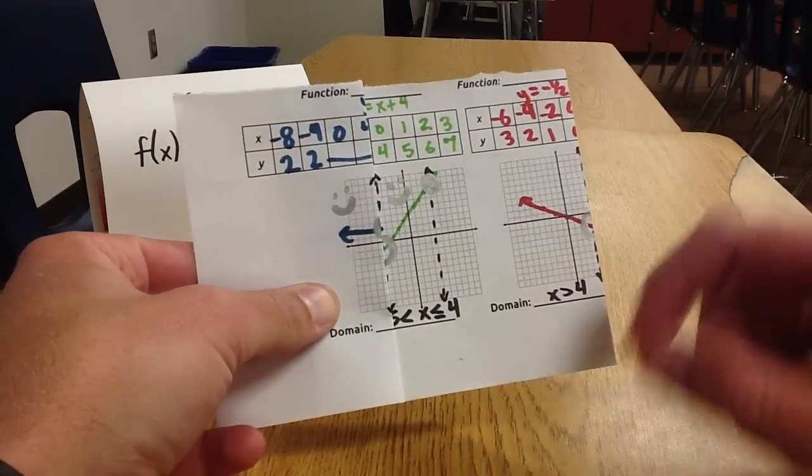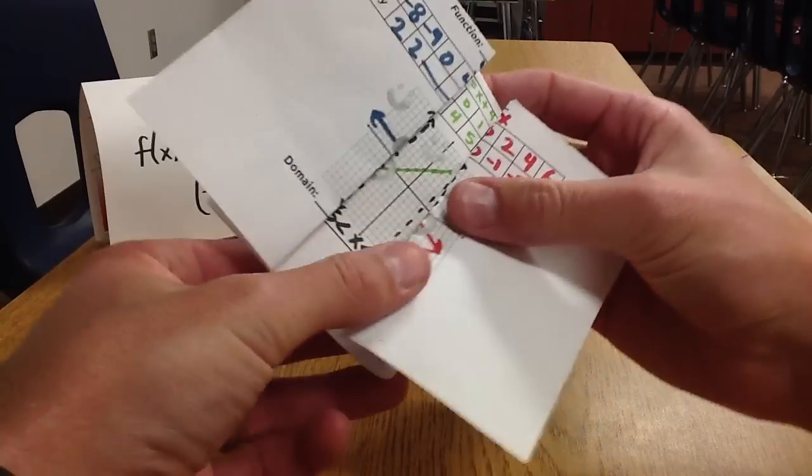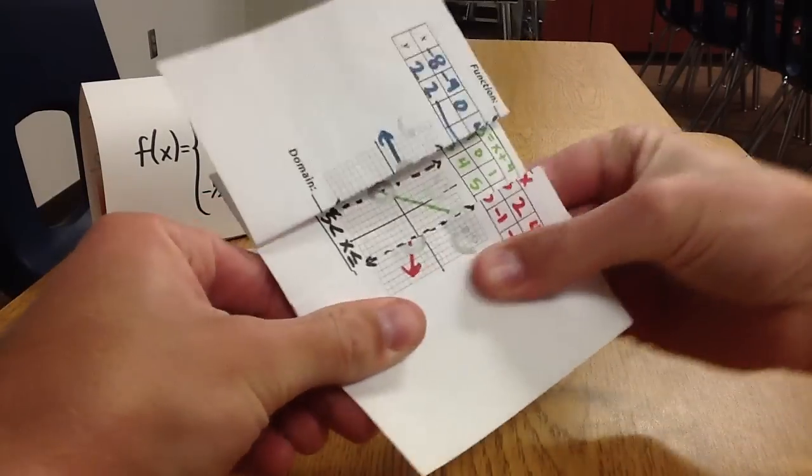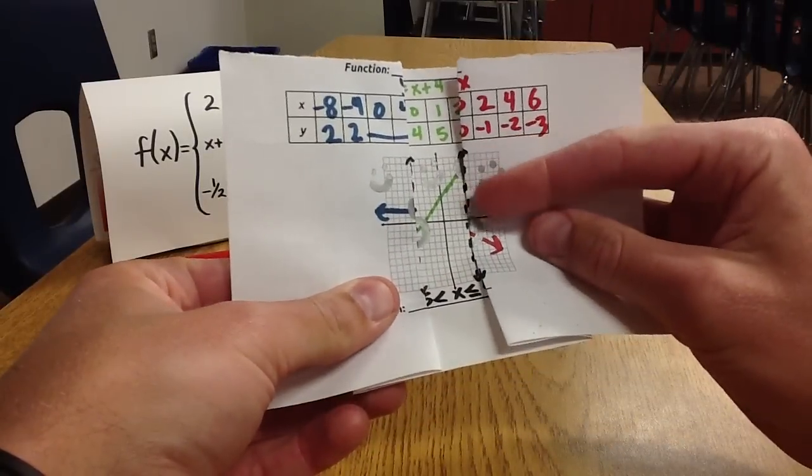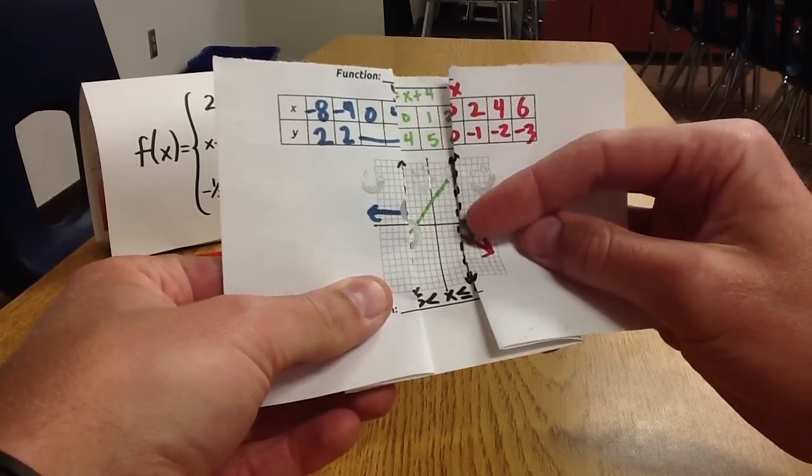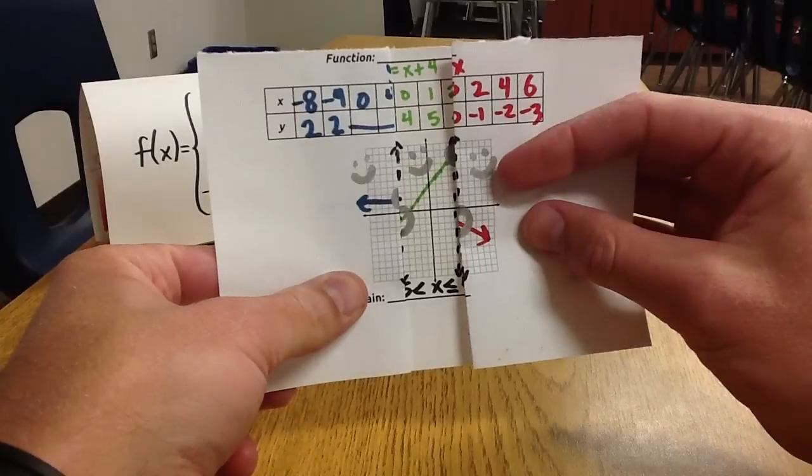Also it verifies that we've passed the vertical line test. And if I swing the rest of this back over to join the rest of the party at positive 4. There. There's the rest of our graph. And one more time, placing emphasis on the fact that it still passes the vertical line test because it's included here for x equals 4 and not there. Up to but not including x equals 4. And we're good to go.